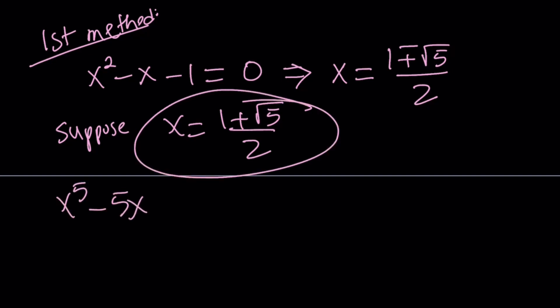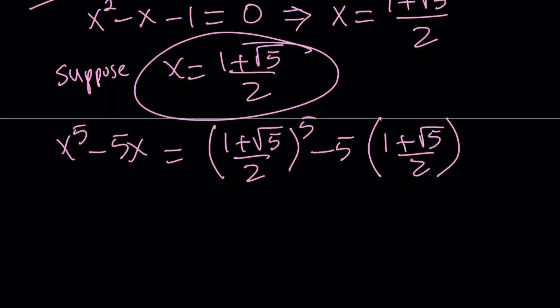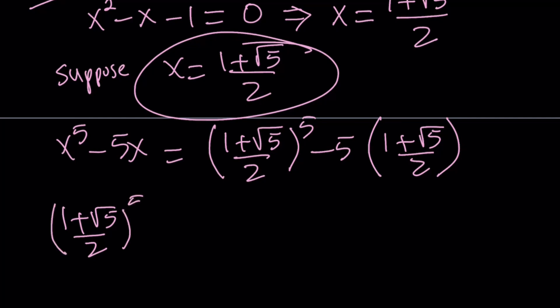x to the 5th minus 5x based on this x value. How can I do that? I can just go ahead and plug it in directly. 1 plus root 5 over 2, raise it to the 5th power, minus multiply it by 5 and subtract. But how do you raise this radical expression to the 5th power? You can definitely use the binomial theorem, but instead of using that, I'm just going to keep squaring it. So I'll take 1 plus root 5 over 2 and basically just write it as the expression squared and then squared again and multiply by itself. So that's going to give you the 5th power of 1 plus root 5 over 2, which is the golden ratio.